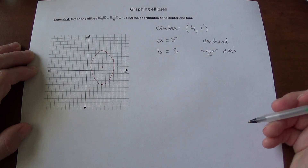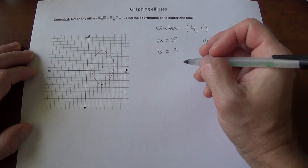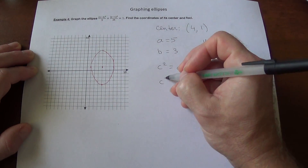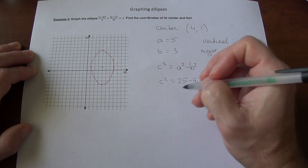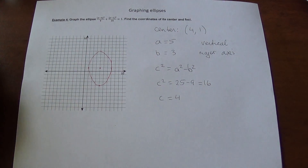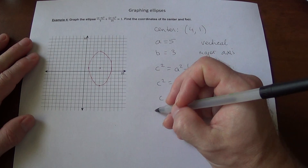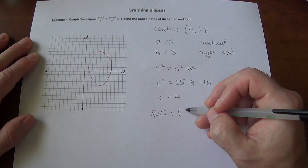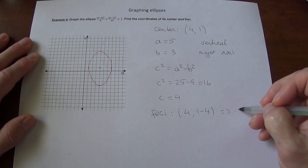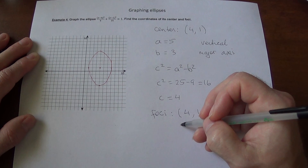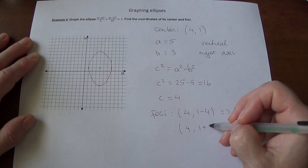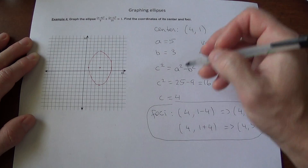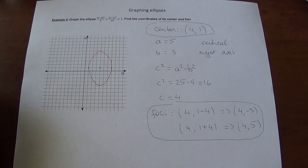We just have to figure out the coordinates of the foci. c squared equals a squared minus b squared: c squared equals 25 minus 9, which is 16 — a perfect square — so c equals 4. Since the major axis is vertical, we change the y-coordinate. The foci are at (4, 1 − 4) = (4, −3) and (4, 1 + 4) = (4, 5). There are the foci, here is the center, and we have the graph. I hope this helps.